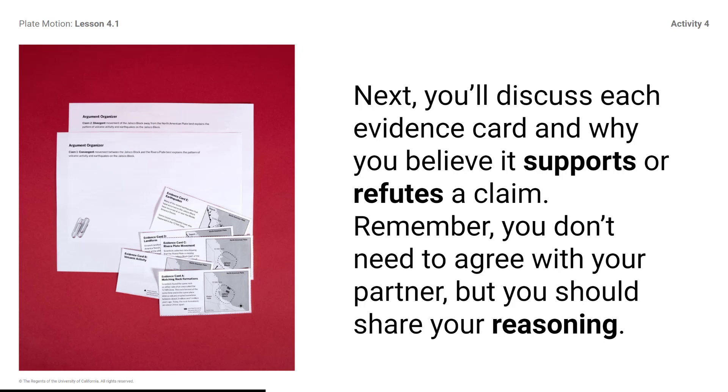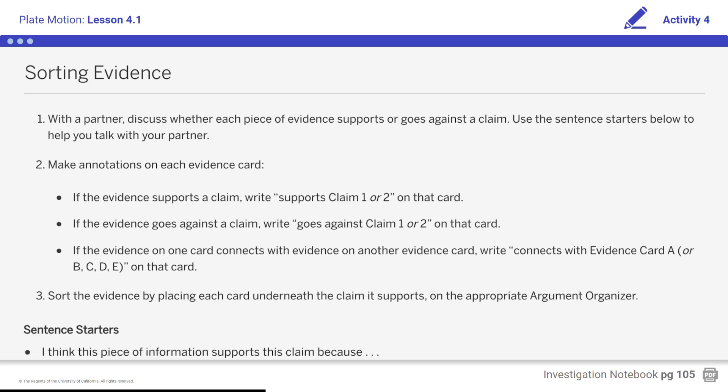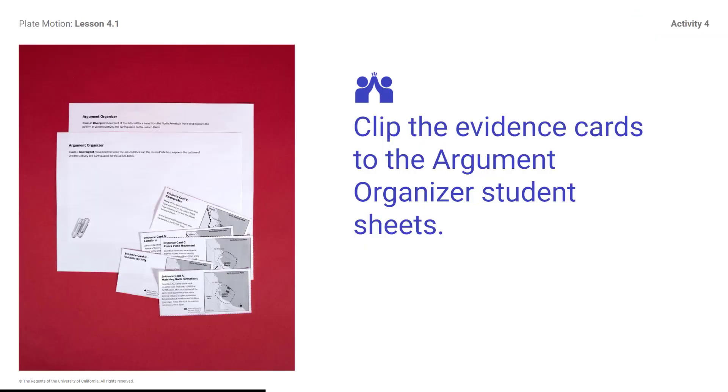Once you've made your decisions, clip the evidence cards to your Argument Organizer. Think about or discuss each piece of evidence and decide if it supports or goes against either of the claims. As you sort the evidence, remember to think about your reasons for why you are placing each card under a given claim. You don't have to agree with others about the placement of the evidence cards as long as you discuss your reasoning. Clip the evidence cards to the Argument Organizer student sheets. End of activity. Be sure to complete all your student work in Amplify for this activity before moving on.